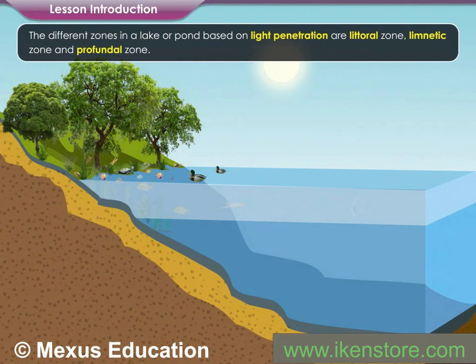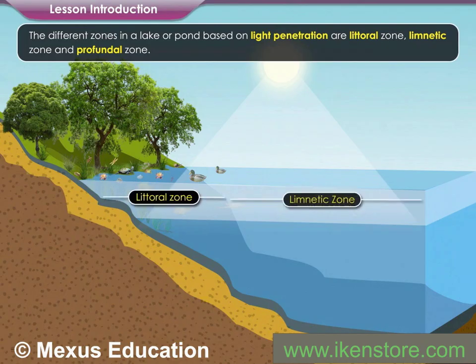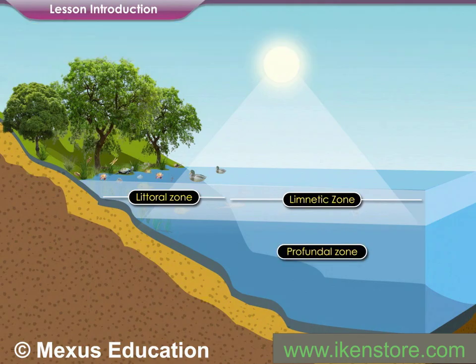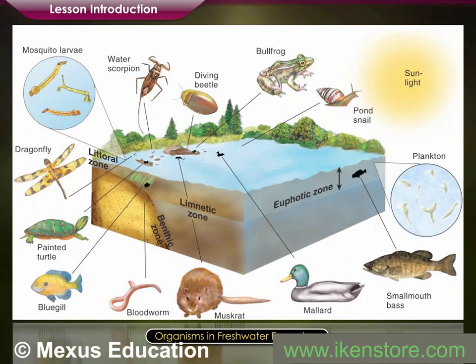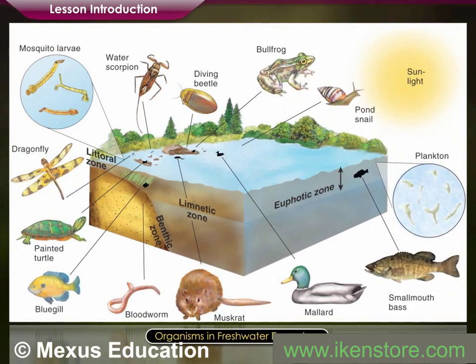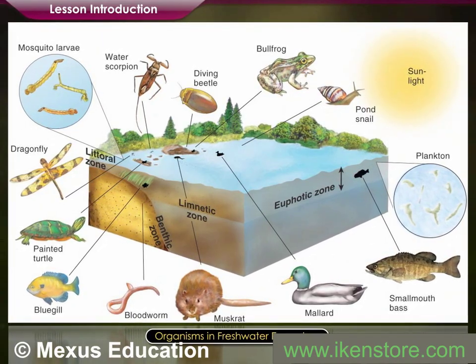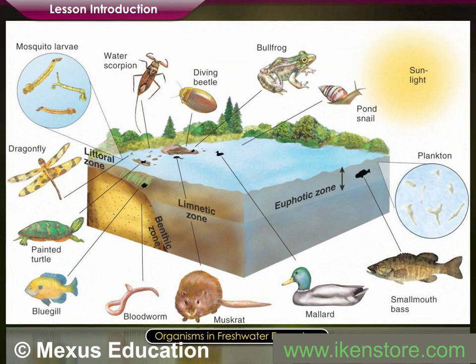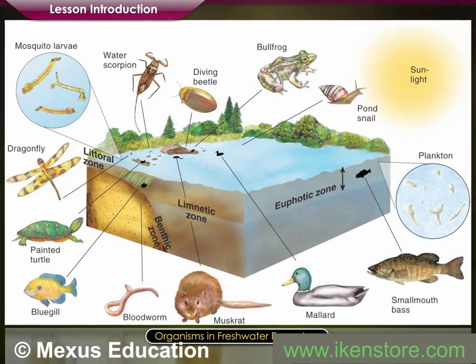The different zones in a lake or pond based on light penetration are the Littoral Zone, Limnetic Zone, and Profundal Zone. Different factors like light, salt content, food, and oxygen affect the organisms and their population in different ways.